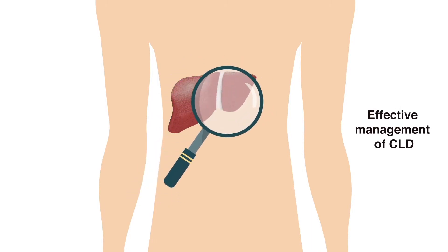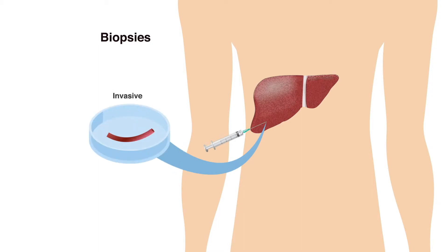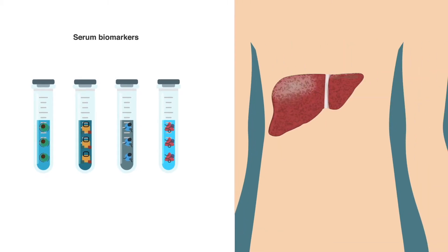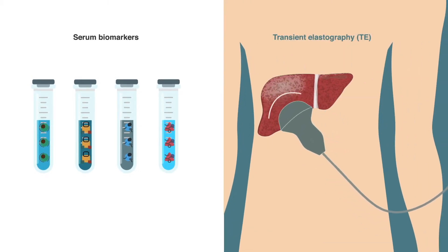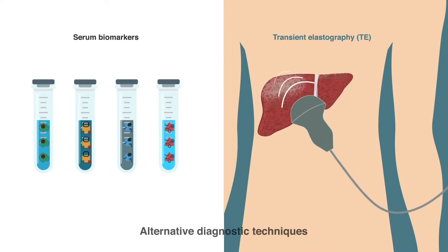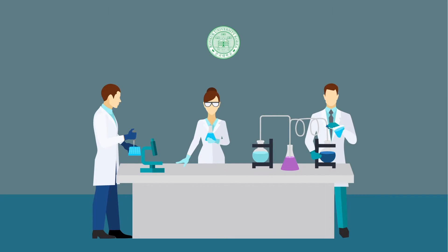Although biopsies are used to diagnose fibrosis, they are invasive and limited. Serum biomarkers and imaging techniques like transient elastography, or TE, have been suggested as alternative diagnostic methods. Scientists from Concook University explored the usefulness of four novel biomarkers.